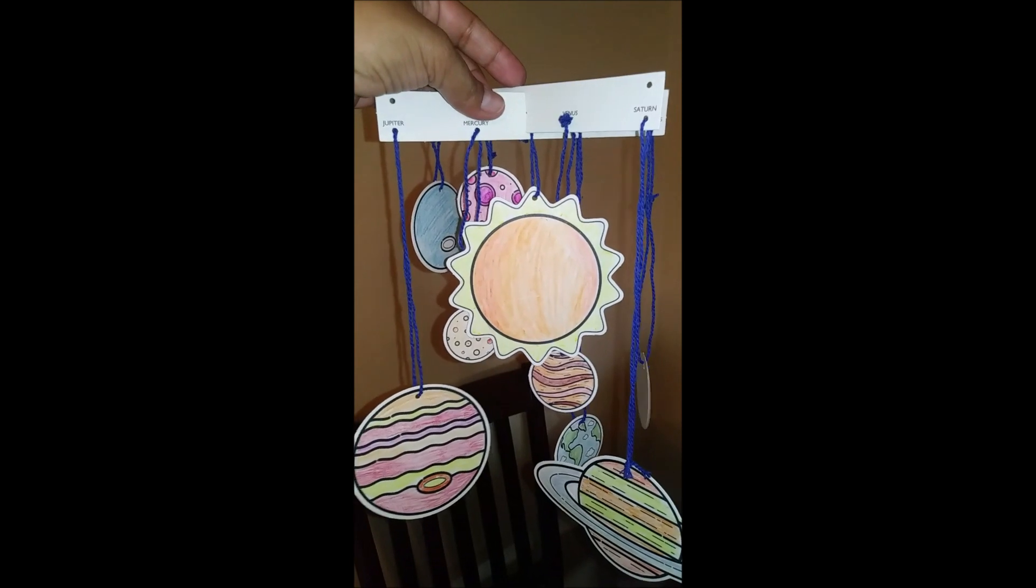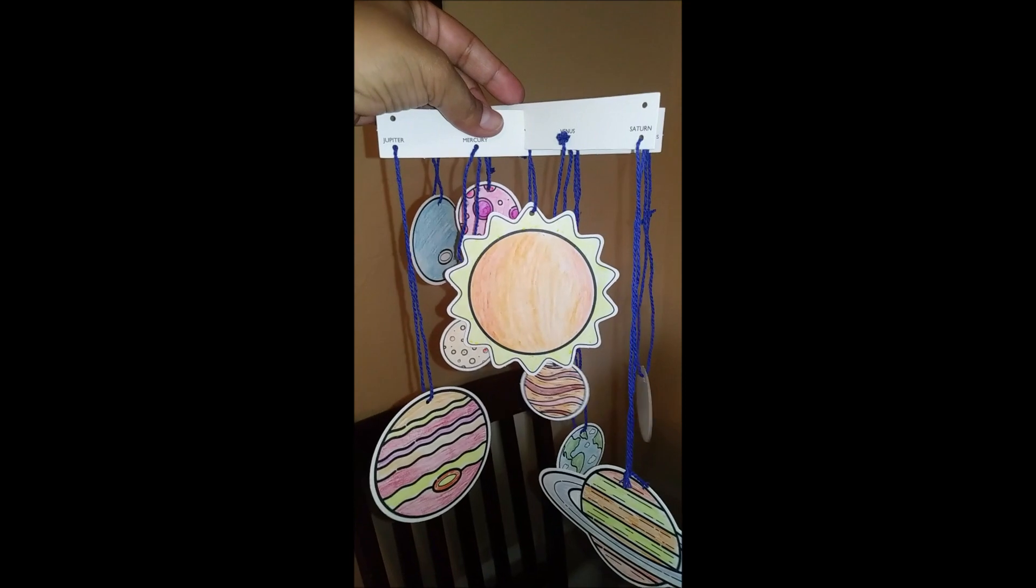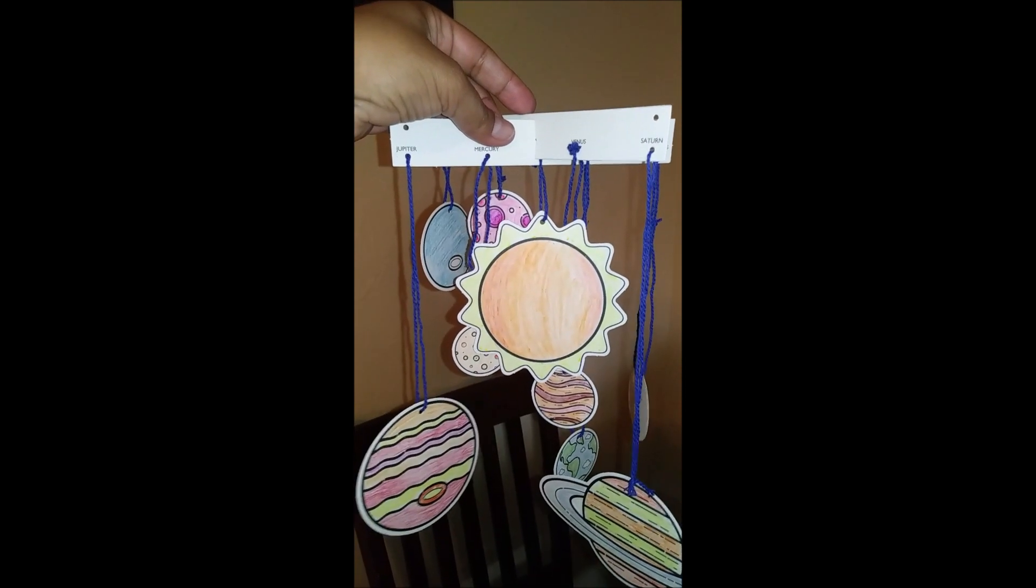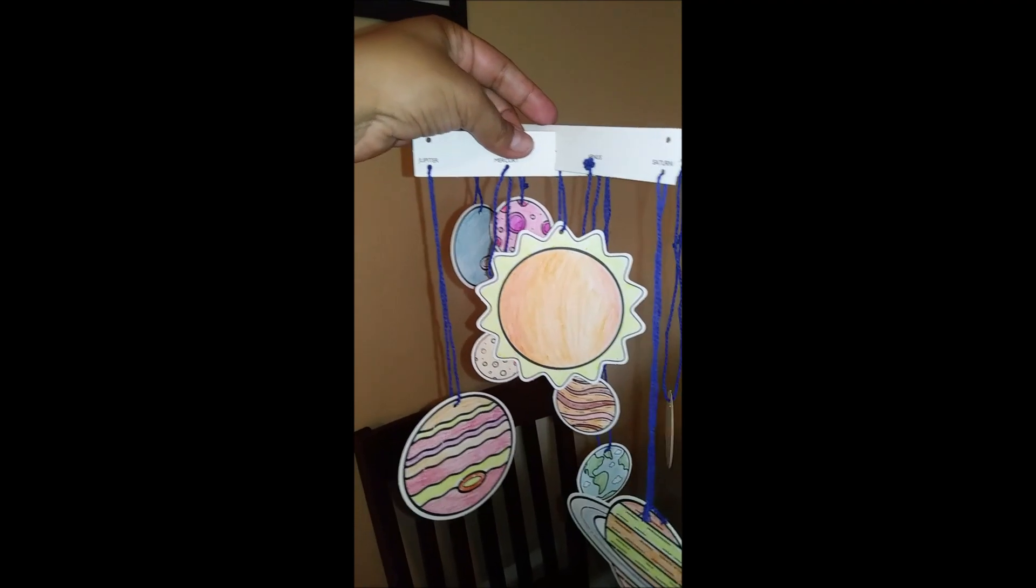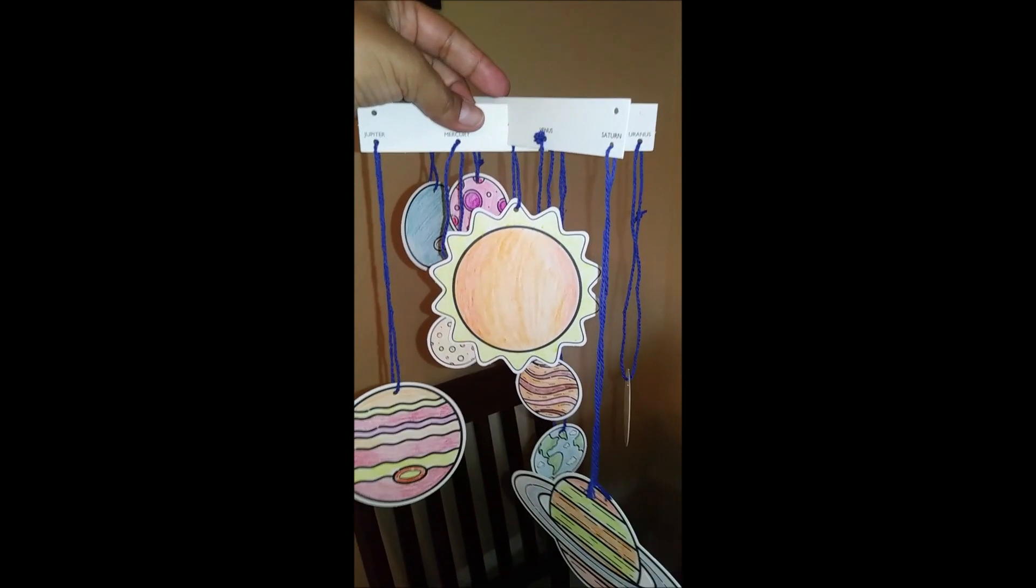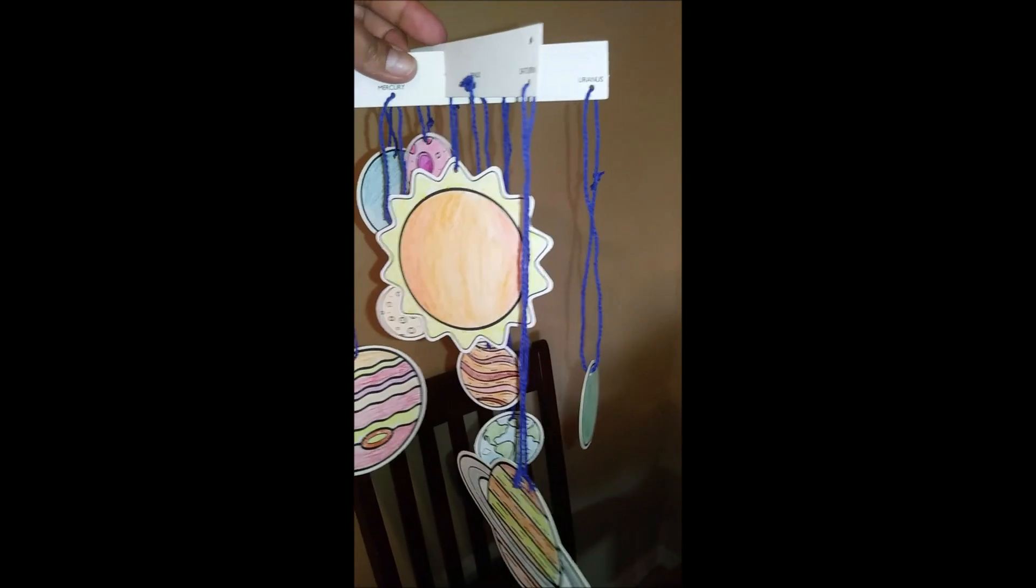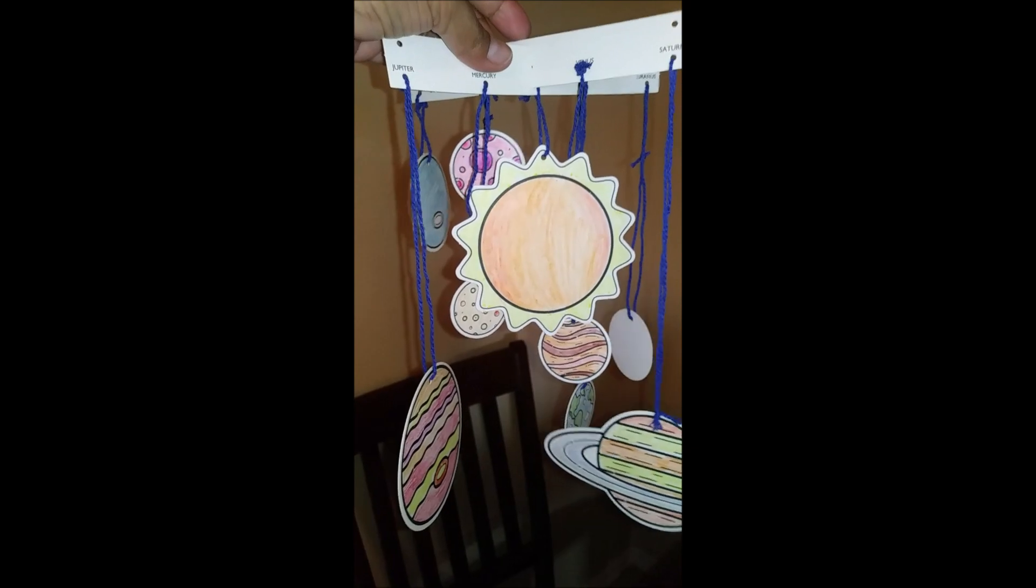And here you have your solar system with eight planets, and the sun. You have the sun, Uranus, Mars, Earth, Venus, Mercury, Saturn, Jupiter, and Neptune. Hope you enjoyed it, and have fun with your arts and crafts project.